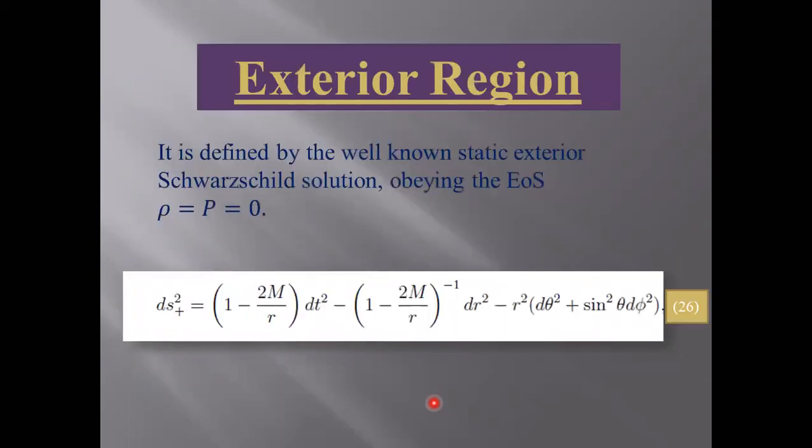Exterior region: it is defined by the well-known static exterior Schwarzschild solution obeying the equation of state given here. So we have taken our exterior region as a Schwarzschild metric.